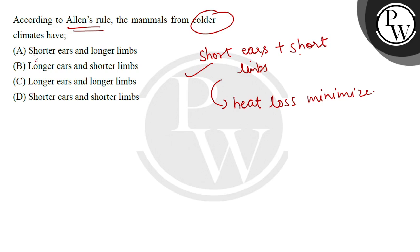So what have we been given in the options? Short ears and long limbs - the long limbs is not correct. Long ears and short limbs - this is wrong. Longer ears and longer limbs - this is wrong. Shorter ears and shorter limbs is the right answer.